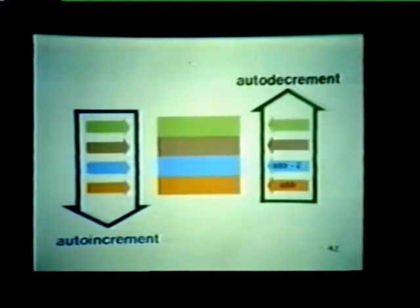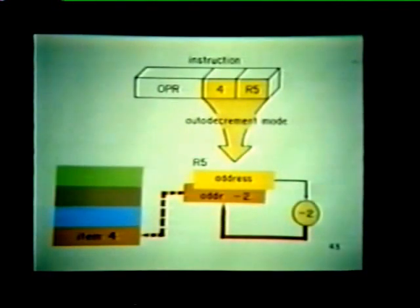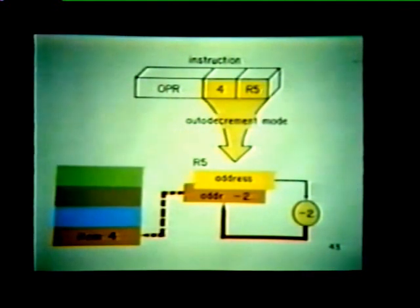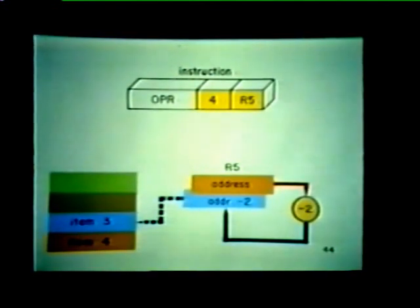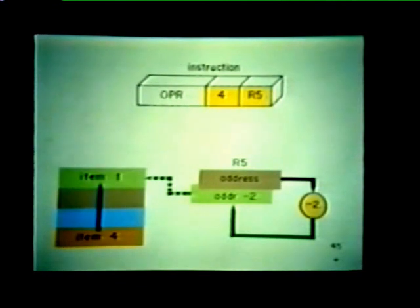By simply reversing the auto-increment function, we can step through a list in the reverse order — in other words, we can use any of our GPRs for auto-decrementing. The CPU enters the auto-decrement mode whenever a 4 appears in the mode field of an instruction word. When auto-decrement is called for, the processor first decrements the address stored in the GPR, then uses this decremented address to locate the operand. In this example, register R5 directs us to the fourth item in the list. Each subsequent execution decrements the address again, stepping through items in reverse order.